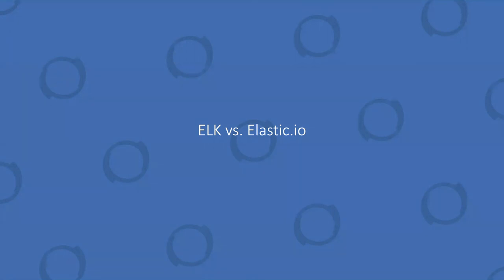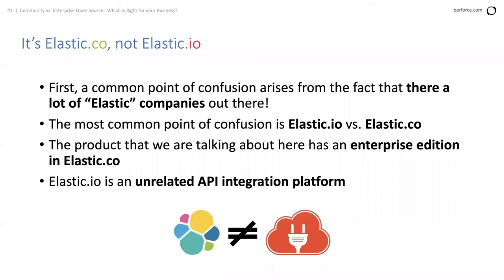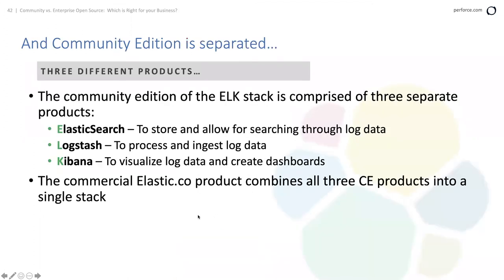ELK vs. Elastic.co — not Elastic.io. Make sure you understand there are a lot of elastic companies out there. Elastic.co is the commercial arm we're talking about here. The community edition of Elastic is separated into three distinct technologies: Elasticsearch, which allows searching of key-value and log data; Logstash, to ingest log data and send it into Elasticsearch; and Kibana, to do visualization of log data — similar to Grafana but geared toward text-based searches and looking at log data.